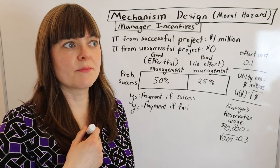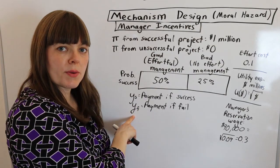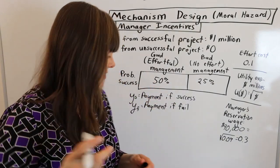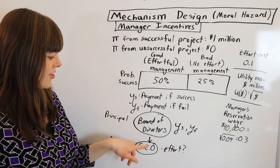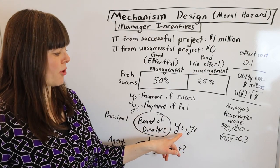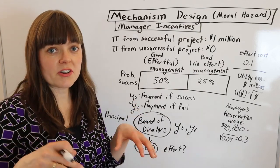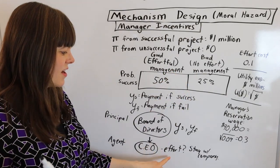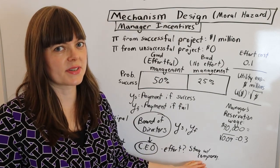We as the board of directors have to decide how much money to pay the CEO if the company is successful — that's YS — and how much to pay them if the project fails. Setting this up as a principal-agent problem: our principal is the board of directors, who are influencing our agent, the CEO or manager. The board's choice variables are the amount to pay the manager if the project is successful and the amount to pay them if it fails. The manager's decision is how much effort to put forth and also whether to stay with the company. Both parties have two choices, setting up both an incentive compatibility constraint — incentivizing effortful behavior — and a participation constraint — incentivizing the manager to stay with the company.